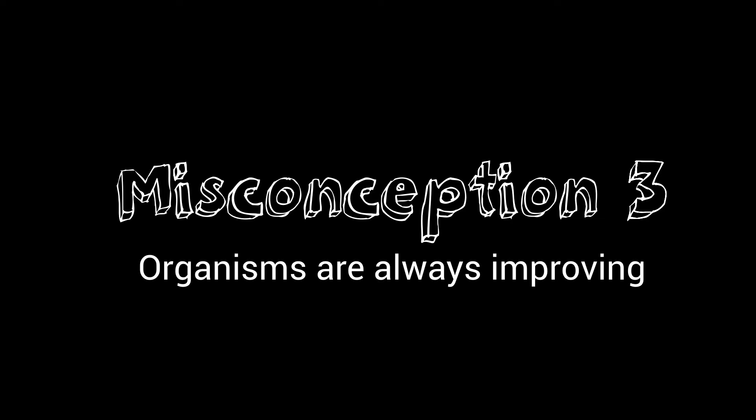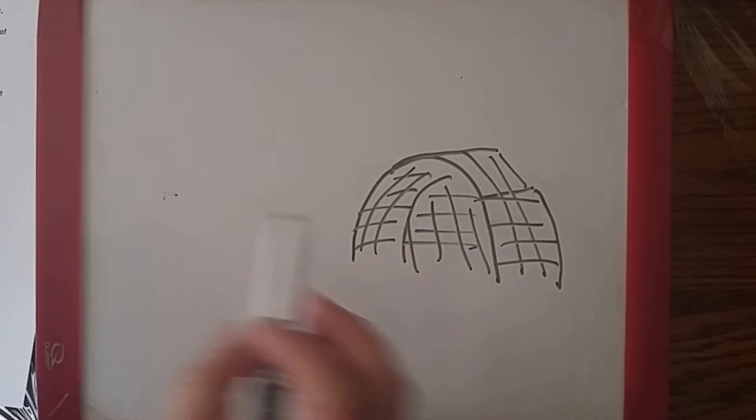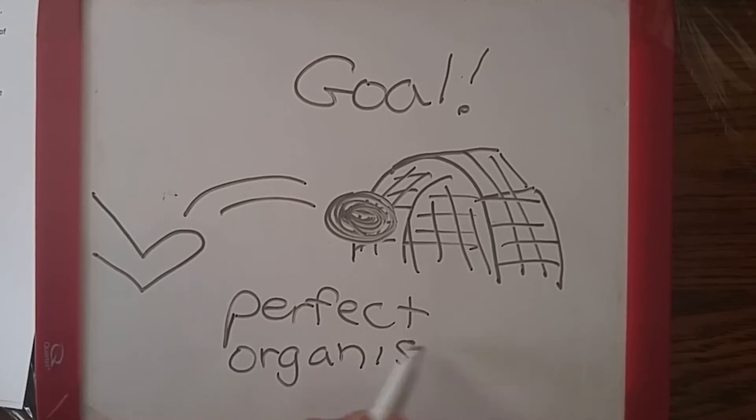Misconception number three, evolution has goals, and organisms are always improving. Natural selection improves the ability of organisms to survive and reproduce in their environment. But this does not mean that evolution is progressive.